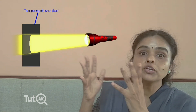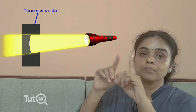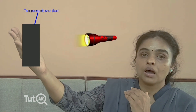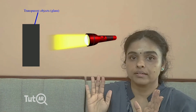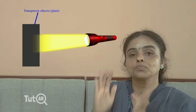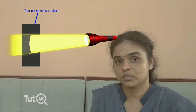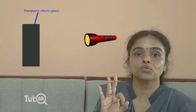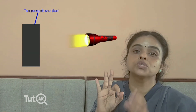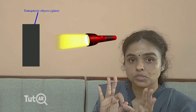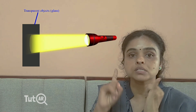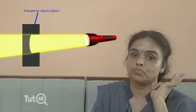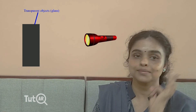Even with windows, we can see plain glass and view things on the other side very clearly. Such objects are known as transparent objects. So we discussed about three types of objects based on transparency: opaque objects, translucent objects, and transparent objects. Thank you.